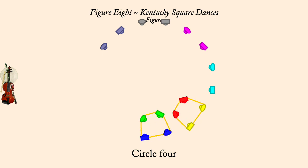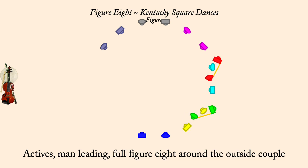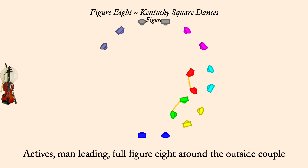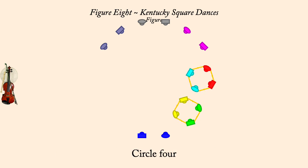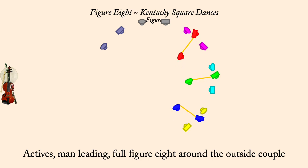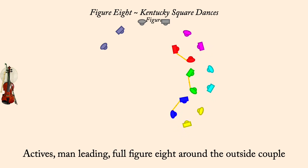On to the right, full figure eight around the outside couple. Circle left four. On to the right, full figure eight around the outside couple. Circle left four.